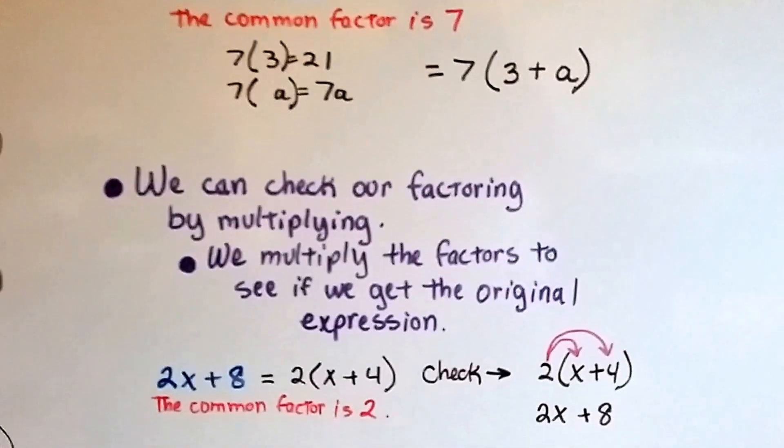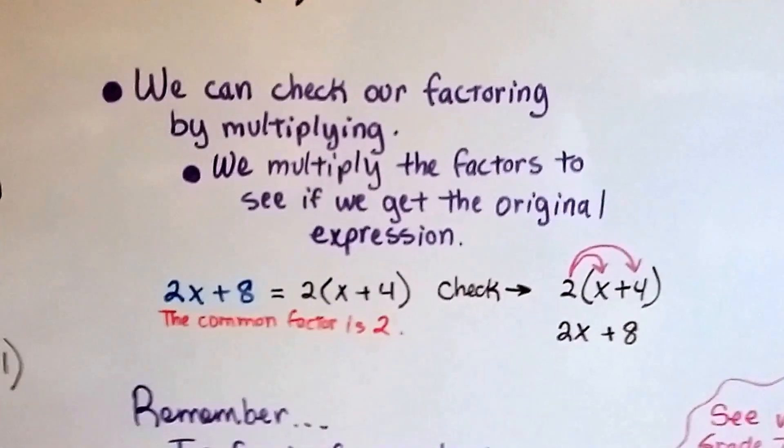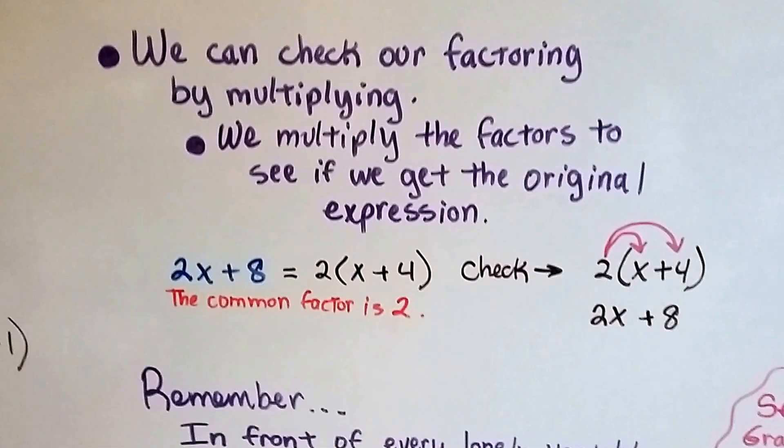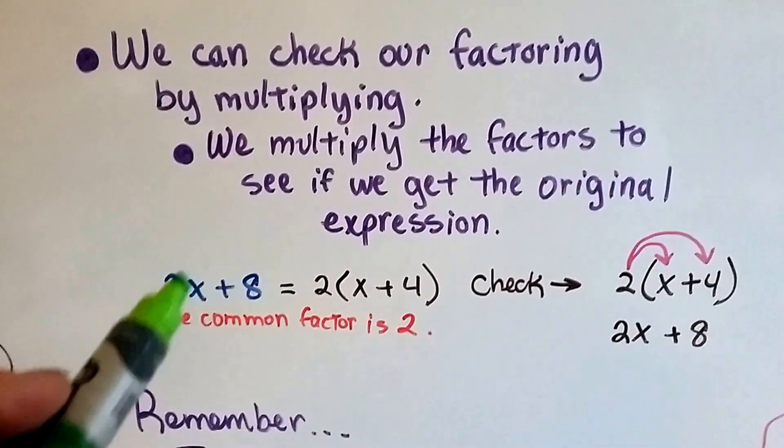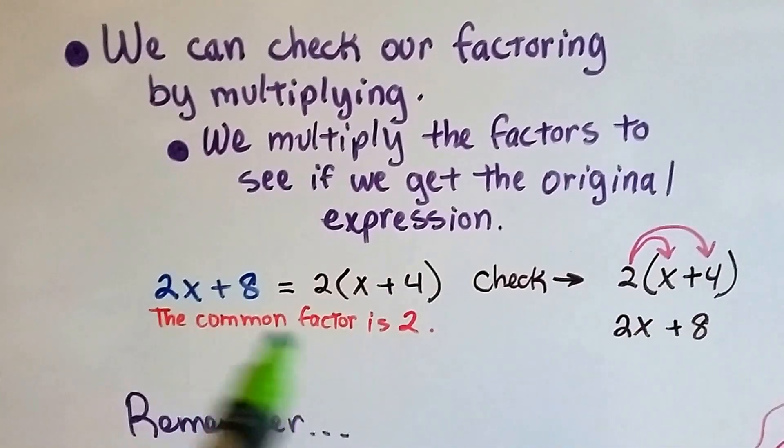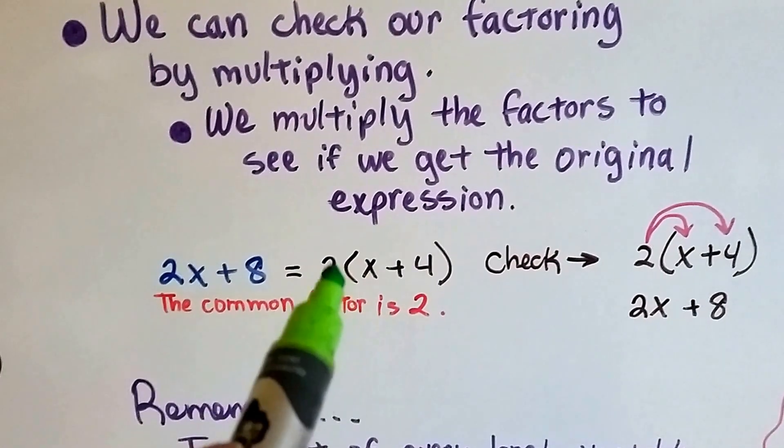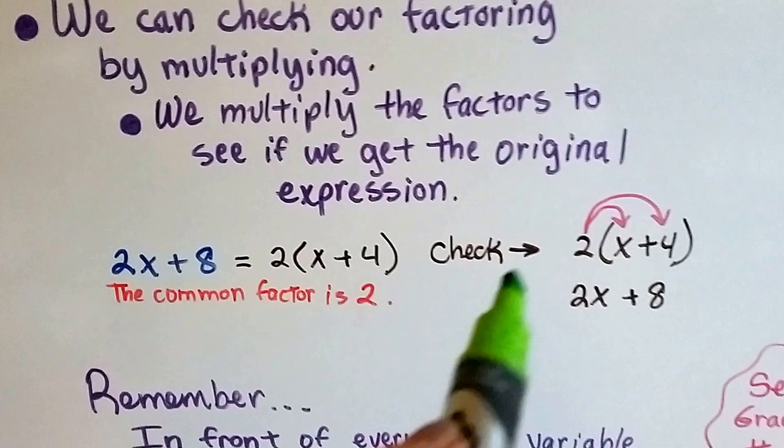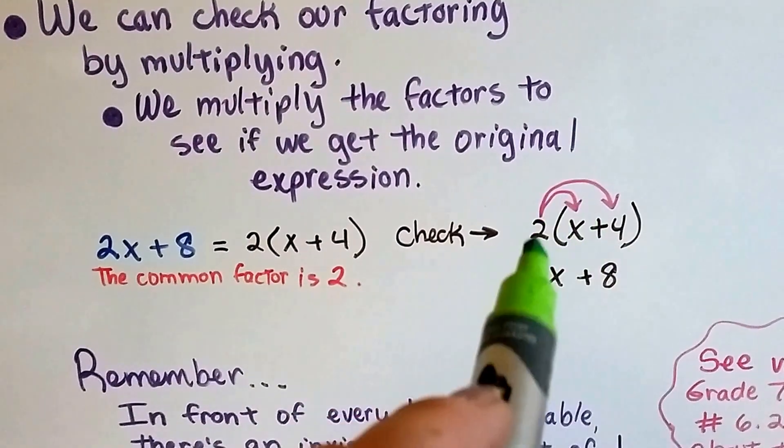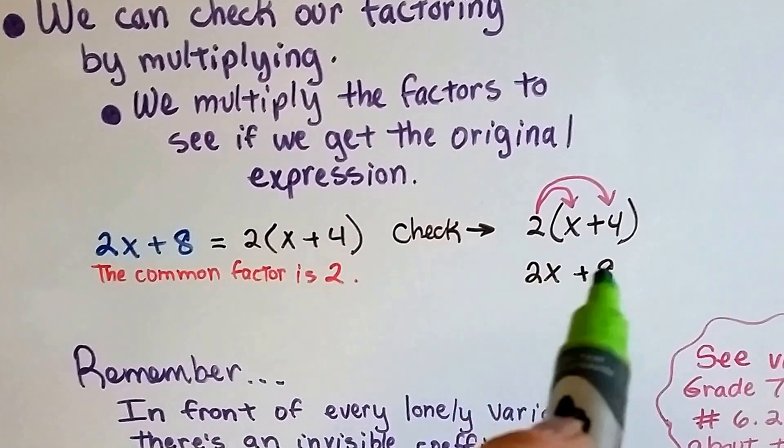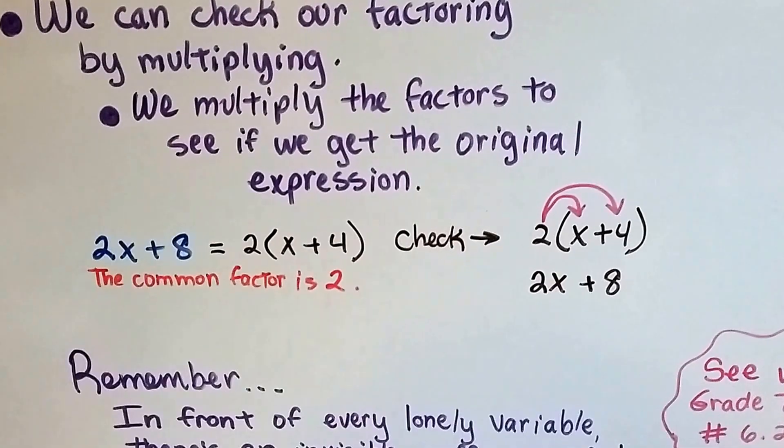We can check our factoring by multiplying. We multiply the factors to see if we get the original expression. So if we've got 2x plus 8, the common factor is 2. That means we've got 2 times x plus 2 times 4. And we do it. 2 times x plus 2 times 4 is 8, and it gets us back to our original expression.